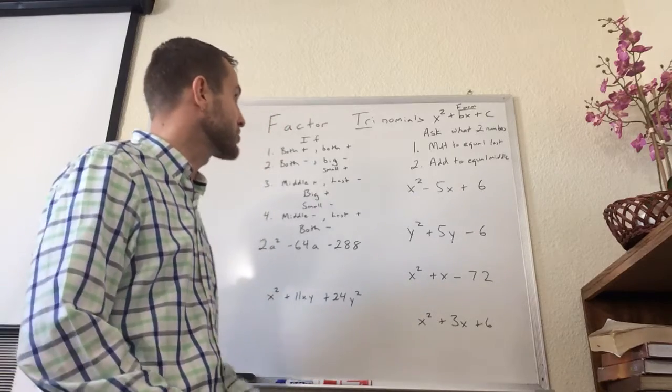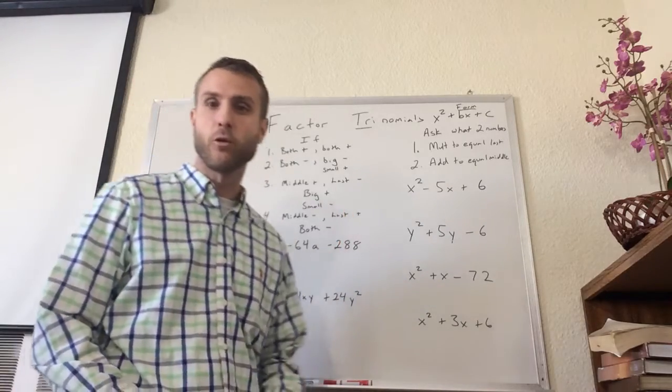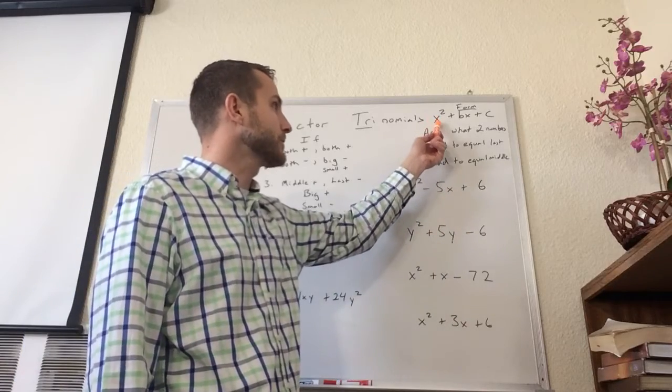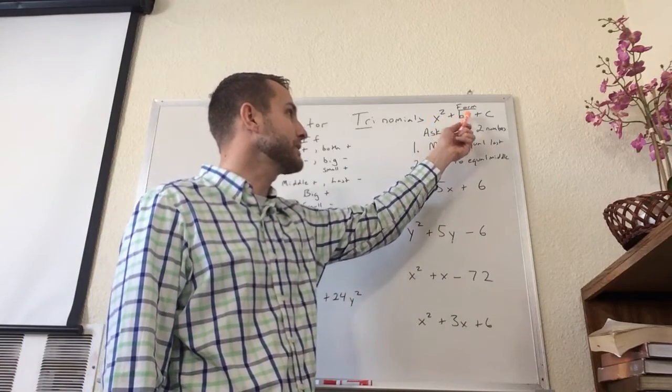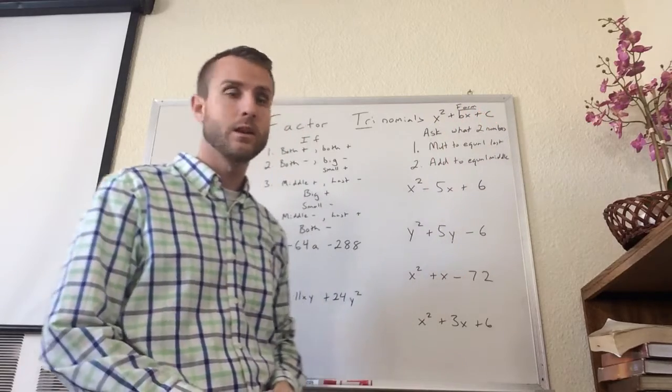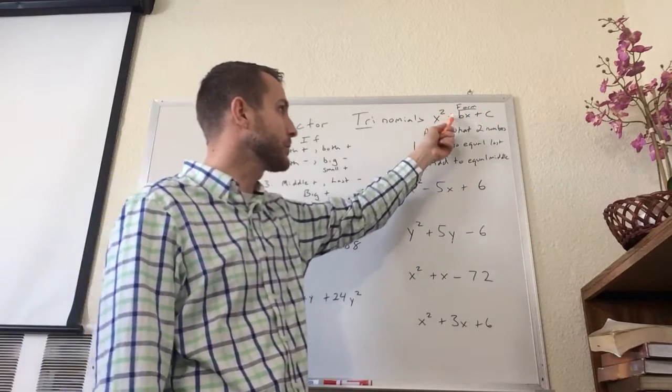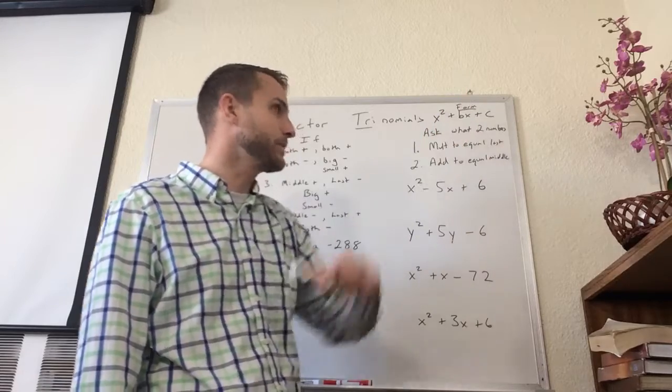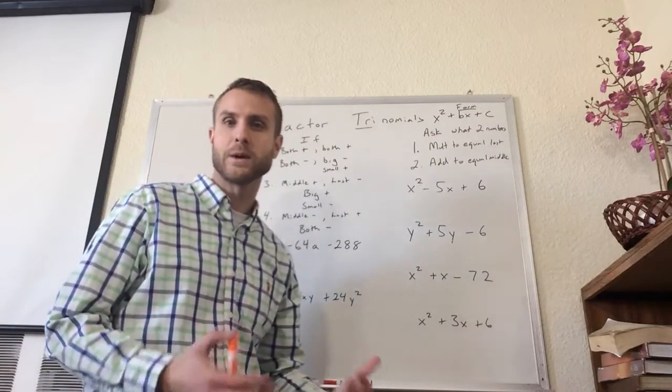Alright, we're going to be talking today about how to factor trinomials in a specific form. When trinomials come in the form of x squared plus something times x plus something, so the b and c represent numbers, anytime they're in the form of x squared plus something times x plus something, I can factor it in a special way.